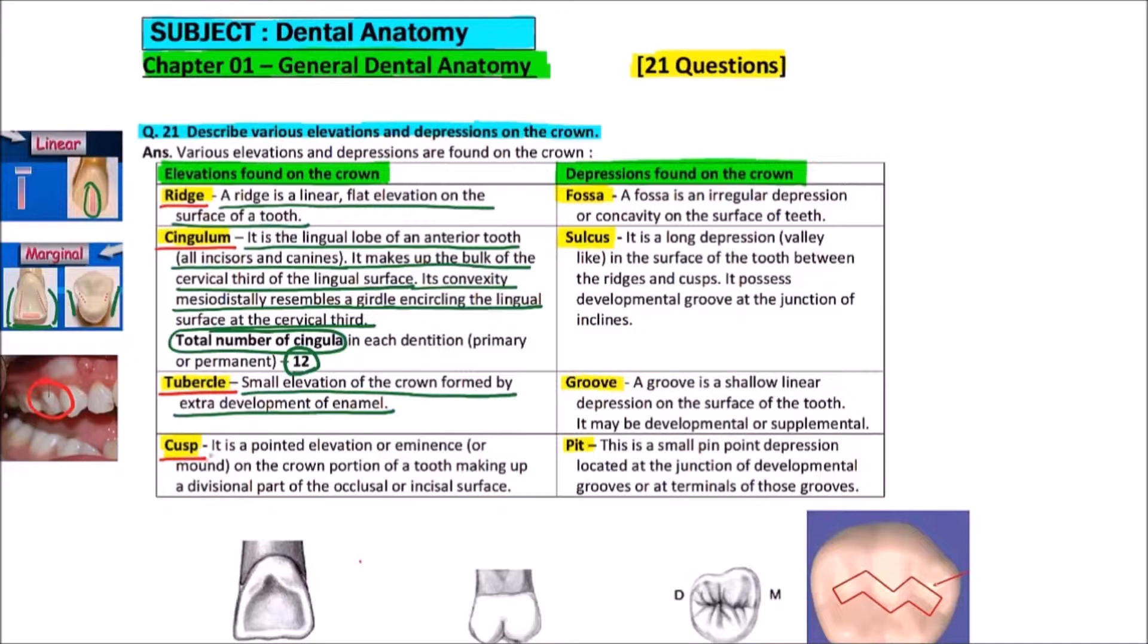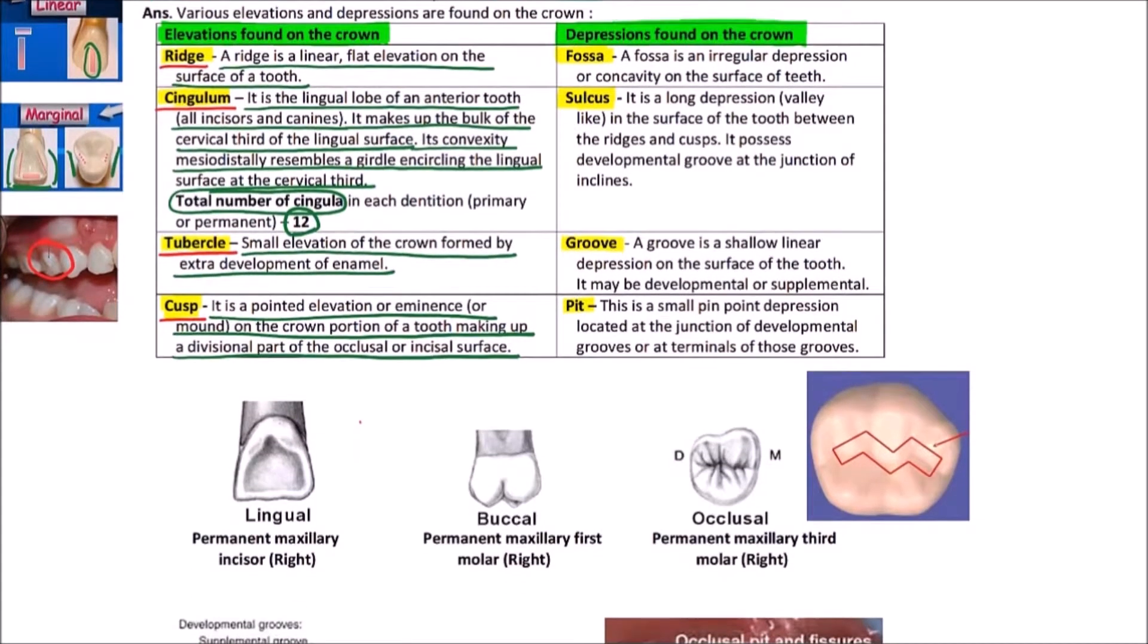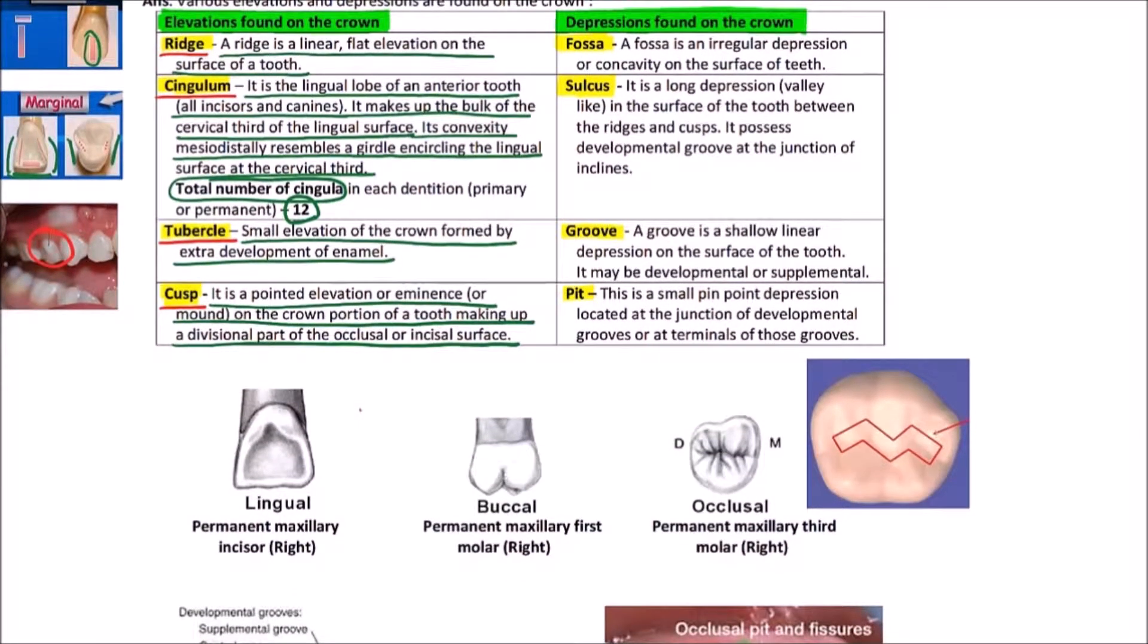Now, the next one is cusp. It is a pointed elevation or eminence on the crown portion of a tooth making up a divisional part of the occlusal or incisal surface. Here we can observe the cusps. These are the cusps.